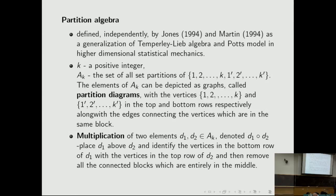In 1994, Jones and Martin independently defined the partition algebra, which was a generalization of the Temperley-Lieb algebra and Potts model to higher dimensional statistical mechanics. This is also a generalization of the Brauer algebra. In classical Schur-Weyl duality, the duality is between GL(N,C) and the symmetric group, which can be further generalized to Schur-Weyl duality between the orthogonal group and Brauer algebra, and the partition algebra generalizes that as well.